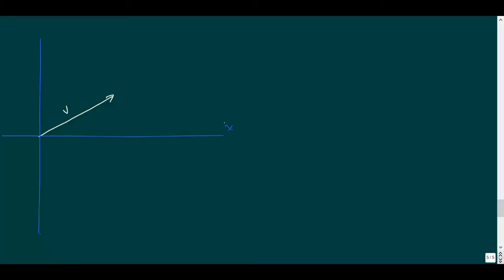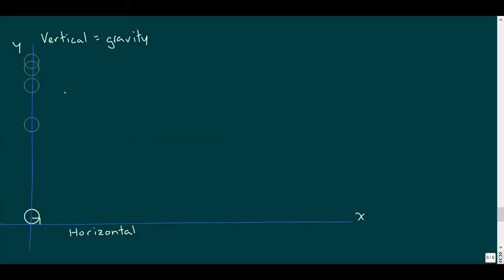Since velocity is a vector, remember that we can resolve any velocity into components on a Cartesian plane or xy grid. Luckily for us, this maps directly to our horizontal and vertical directions. And since gravity only acts in our vertical or y direction, a projectile only accelerates vertically.